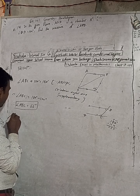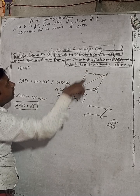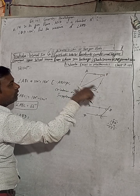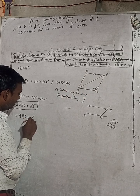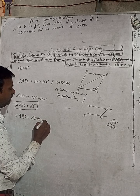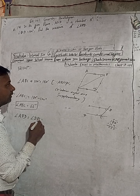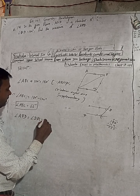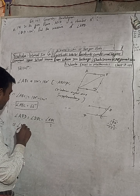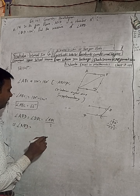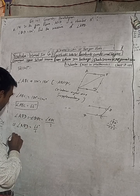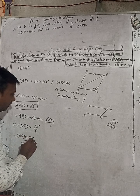Now we can write that angle ABD is equal to angle DBC, and that equals half of angle ABC, which is ABC divided by 2. So angle ABD equals 66 degrees divided by 2, therefore angle ABD is equal to 33 degrees.